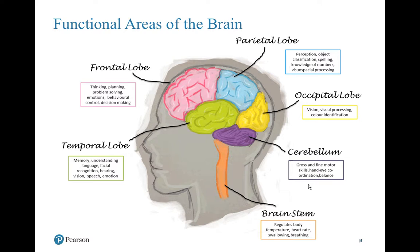Below that is the temporal lobe, which controls memory, speech, hearing, and facial recognition. At the rear of the brain is the occipital lobe, where vision and visual information processing is located. The parietal lobe controls perception, classification of objects, spelling, number recognition, and visual-spatial processing. If you were to mark the attention areas of the brain, they would be almost everywhere — in the frontal lobe, temporal lobe, parietal lobe, cerebellum, and brain stem.